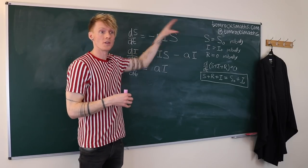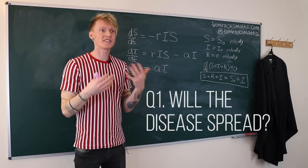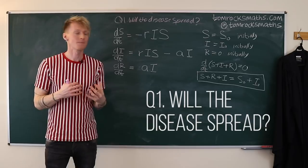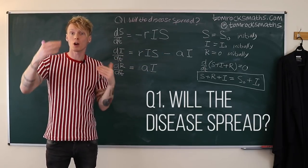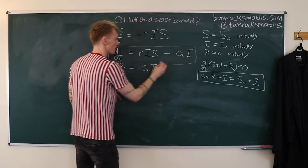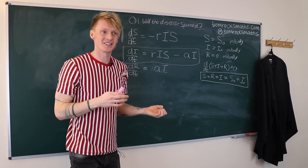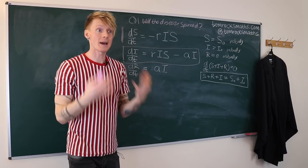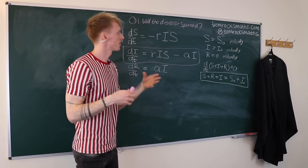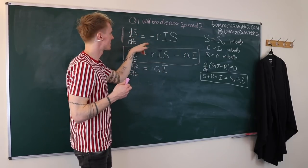Now we can ask some interesting questions. The first: will the disease spread? We have an initial number of infected people I₀, and we want to know if that will grow. Looking at dS/dt, since r is a positive transmission constant and both I and S are positive, dS/dt is always negative — so S is always decreasing from its initial value.